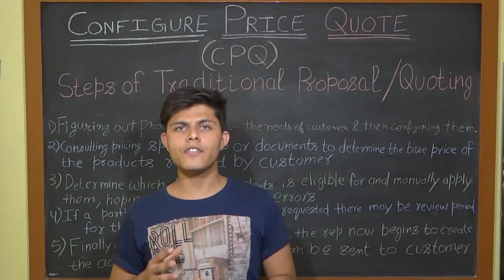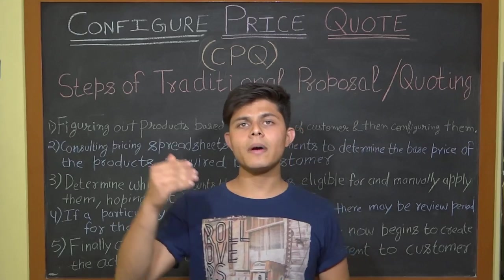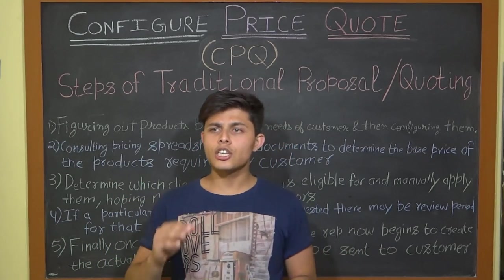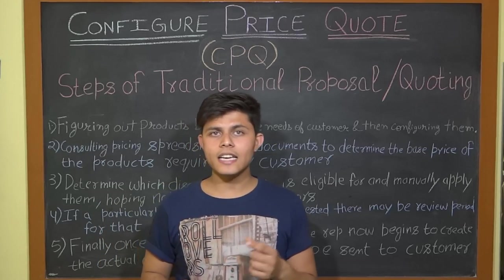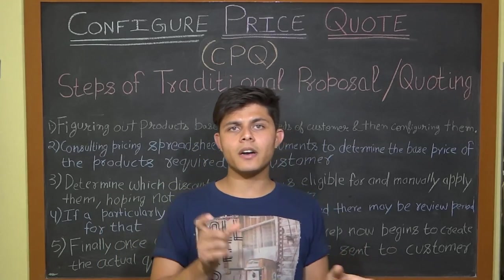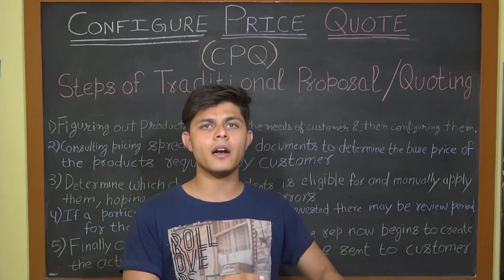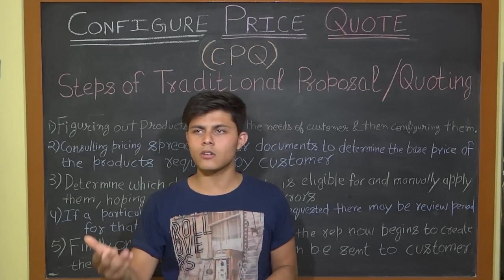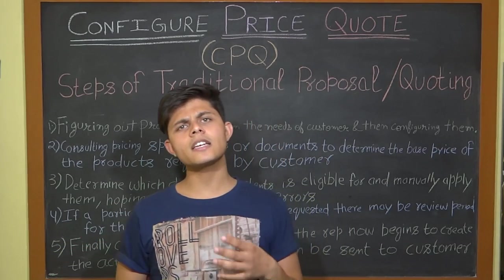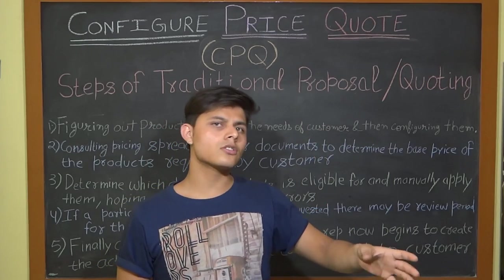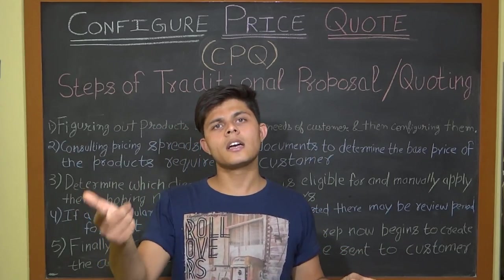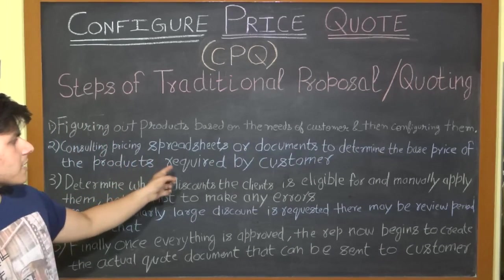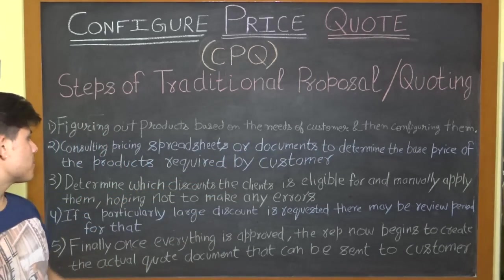Step one is figuring out products based on the needs of the customer and then configuring them. This means analyzing what the customer's needs and requirements are and identifying which products and services suit them best. There can be multiple products and services involved, so you first need to make a list and configure them accordingly.